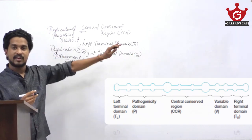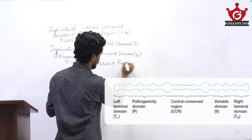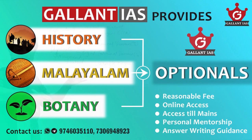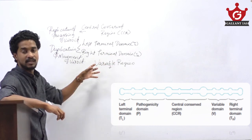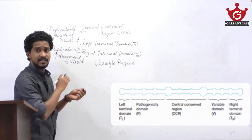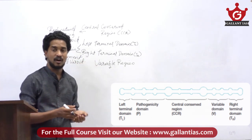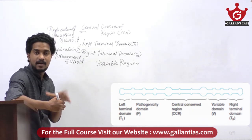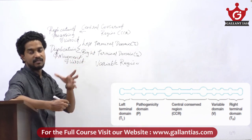There is also a variable region. This variable region is the most different region among Viriodes of the same genus. And the other component is the pathogenicity domain, which is responsible for the regulation of symptom expression.